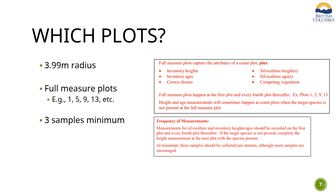Now we need to cover the sampling intensity. I'm asking that you collect the Swiss needle cast data at your full measure plots — this term is explained in the silviculture survey procedures manual. It's your first plot and every fourth plot thereafter: plots 1, 5, 9, 13, 17, etc. These are the plots where you're already doing extra data collection like inventory heights and ages, crown closure, vegetation, etc. In the manual, we recommend at least three full measure plots per stratum. So when you have less than nine plots in a stratum, you turn one of your count plots into a full measure plot to ensure enough height, age, and crown closure samples.